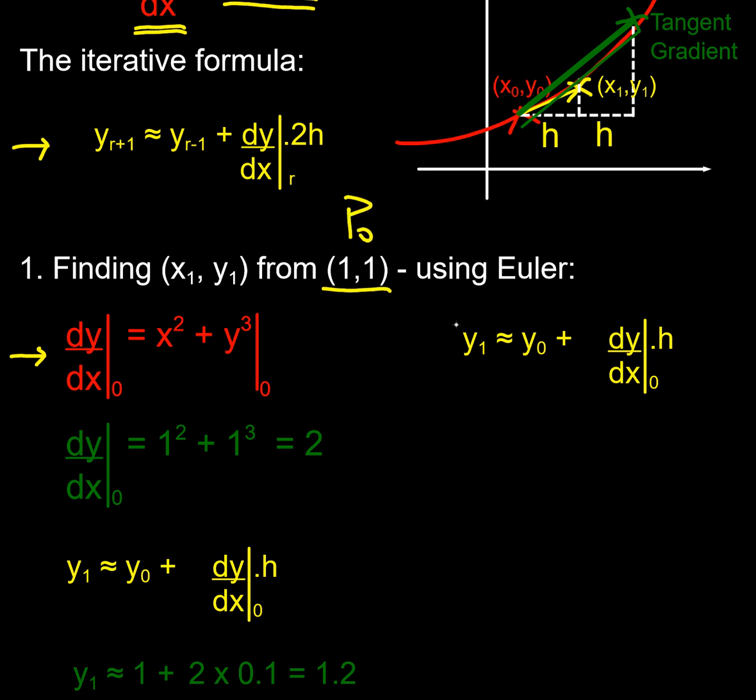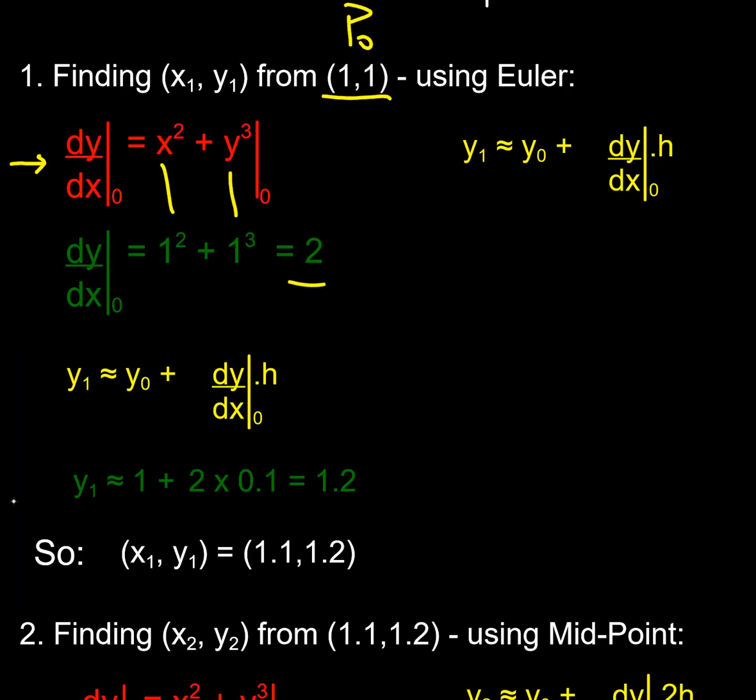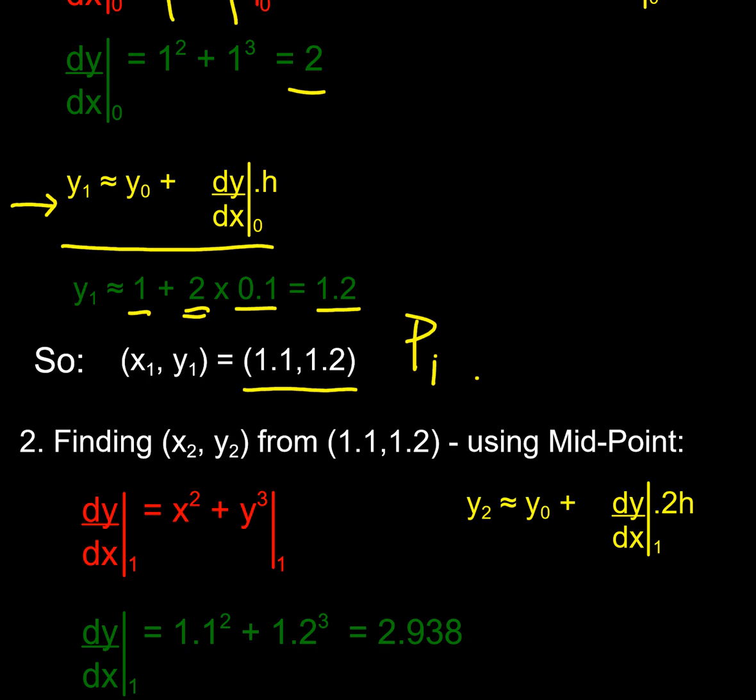I just sub the values in just like we did before. At (1,1) I find my gradient at that point is 2, and I find my first point along, p1, using my Euler equation. Just my Euler linearization: I started at 1, my gradient is 2, and I've gone an increment 0.1, so I get to 1.2. So that's effectively the Euler p1, just like it was before, but then we start to change things.